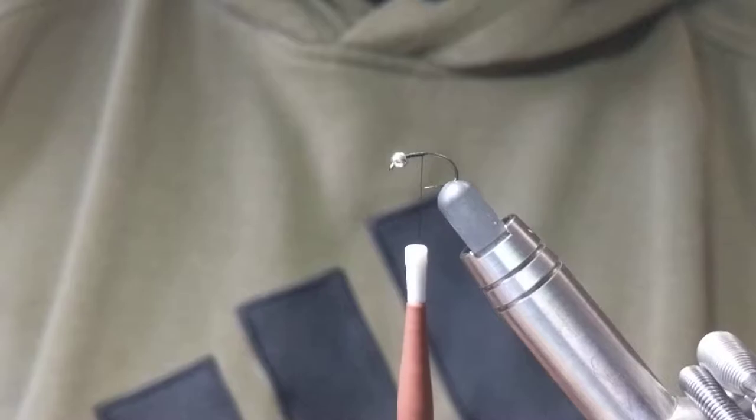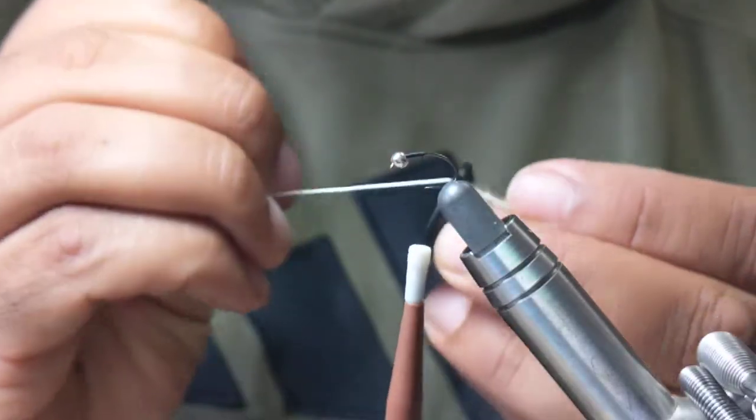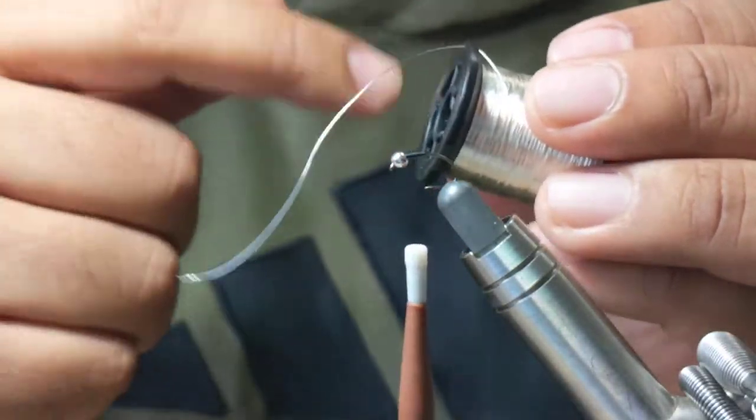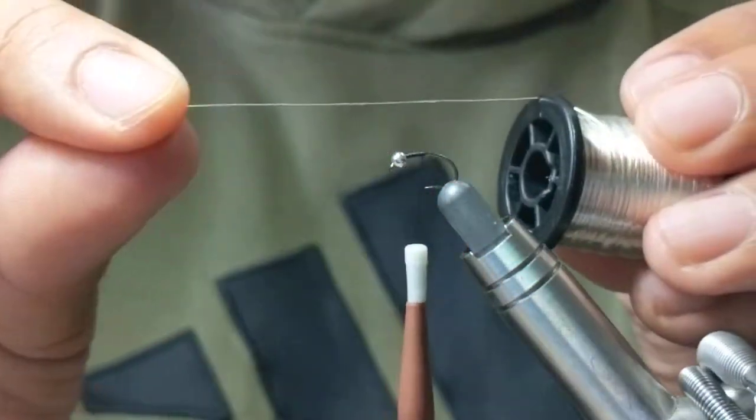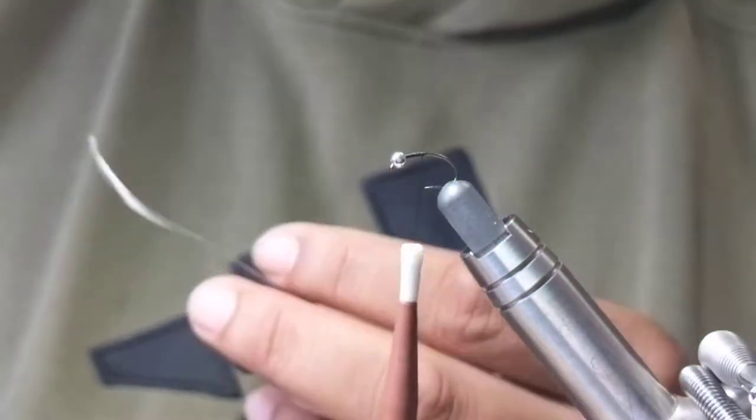For the smaller flies, I find just one wrap, an unraveled wrap, and then where it locks in is more than enough. I'll cut that off and I always like my wires nice and straight as possible.